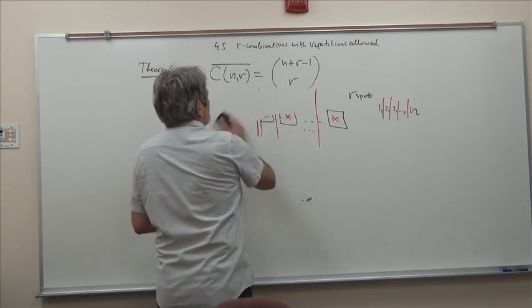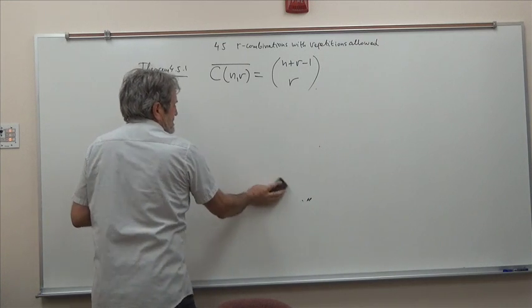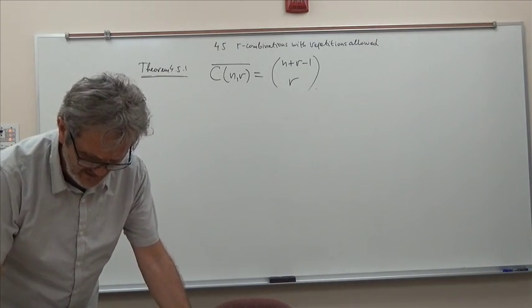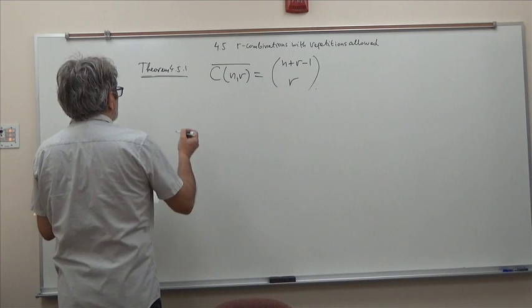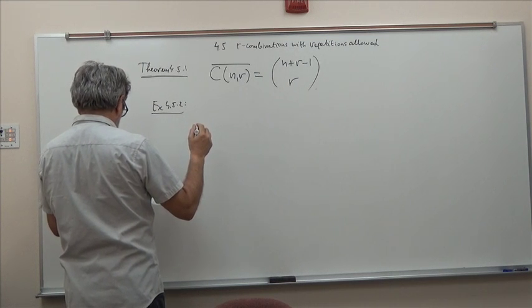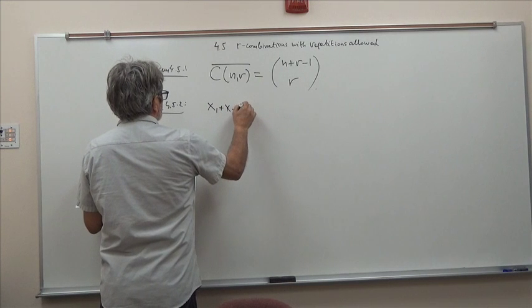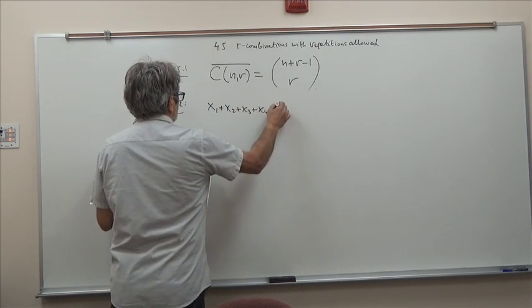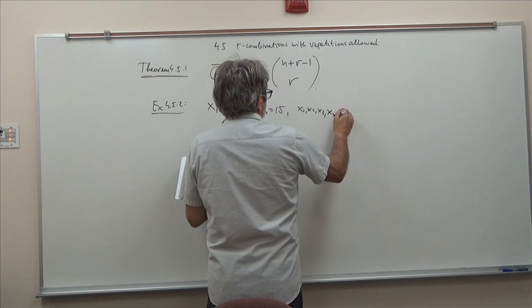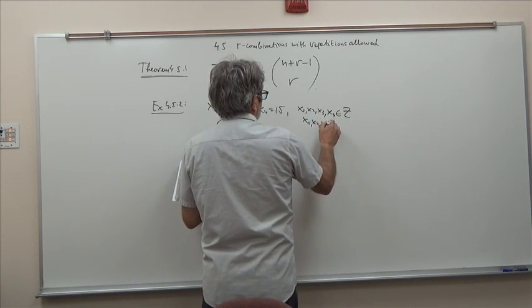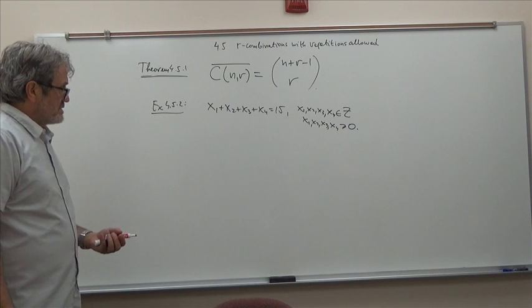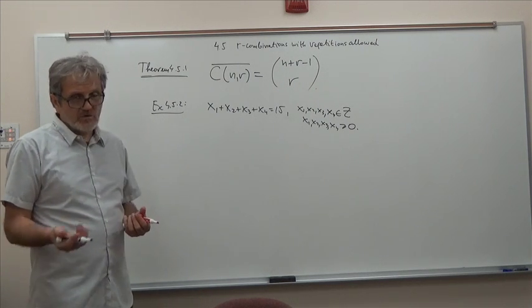Sometimes I refer to this formula, sometimes I just introduce stars and bars in the middle of the problem. Example 4.5.2 says: How many solutions are there for the equation x₁ + x₂ + x₃ + x₄ = 15, where x₁, x₂, x₃, x₄ are non-negative integers? What would be the combinatorial story about this equation? I say I have 15 apples, I have four kids, and I want to distribute these 15 apples among them. In how many ways can I do it?